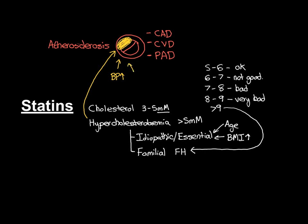Another major risk factor is smoking. Whenever you smoke a cigarette, you breathe in all sorts of toxins that are absorbed in the lungs into the blood. They circulate within the bloodstream, poison the walls of the arteries, and irritate them — promoting atherosclerosis. If you smoke, you're more likely to develop atherosclerosis and at a younger age. So that's a brief discussion of risk factors, and this is why we get concerned about hypercholesterolemia — it's a major risk factor for developing atherosclerosis.